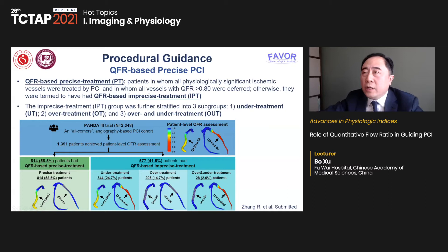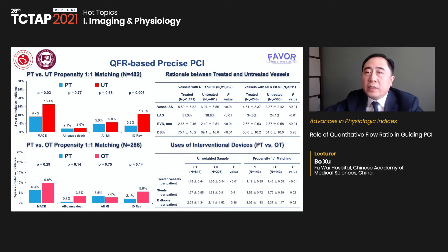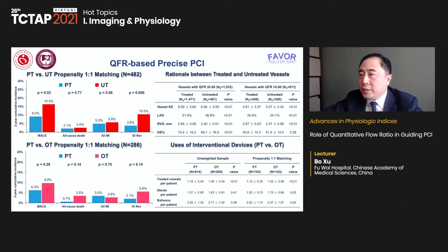Achievement of QFR-based precise treatment was associated with improved two-year clinical outcomes on both adjusted and IPTW analysis. In sensitivity analysis, precise treatment was associated with reduced event rate compared to under-treatment; however, compared with over-treatment, the small sample size meant we could not see a statistically significant difference. Nevertheless, use of medical devices could be reduced during the procedure.